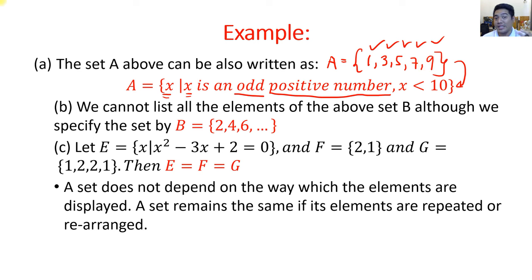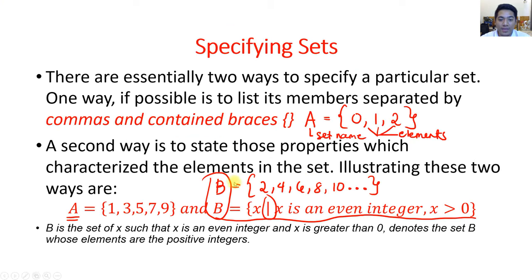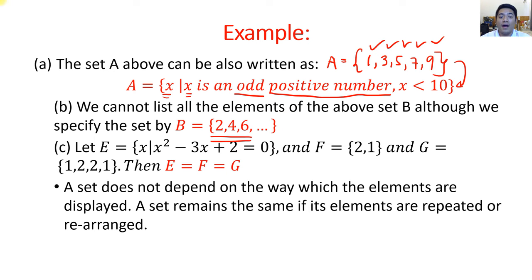For set B, we cannot list all the elements since the even integers greater than 0 are infinite. For letter C, let E be the set of all x such that x² − 3x + 2 = 0. Set F = {2, 1} and set G = {1, 2, 2, 1}. Then E = F = G.